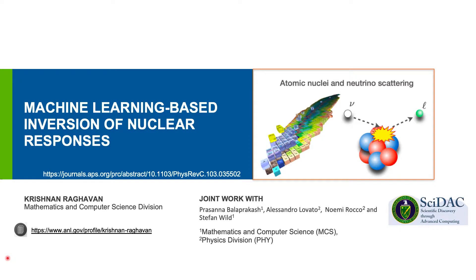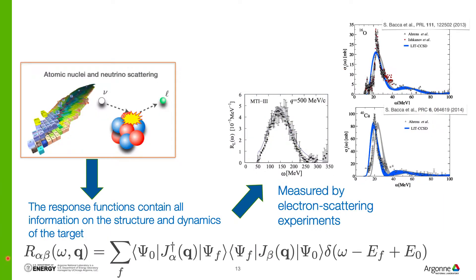Our second use case is inversion of nuclear responses. The neutrino scattering experiment is one of the promising methods to understand the nucleus of an atom. Scientists take a beam of particles, target them at a nucleus, and the scattering — both the beam and the scattered nucleus — allows them to understand the properties of the nucleus. What is usually observed is something called a response function, which contains all the information on the structure and dynamics of the nucleus. On the x-axis is the strength of the beam, and on the y-axis is the response — a unique signature for different nuclei.